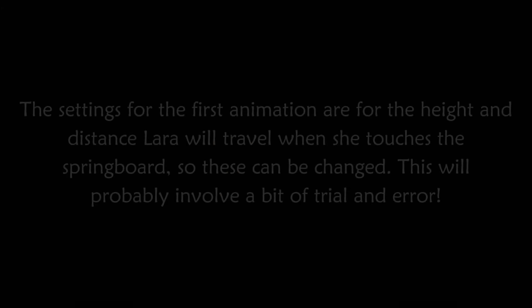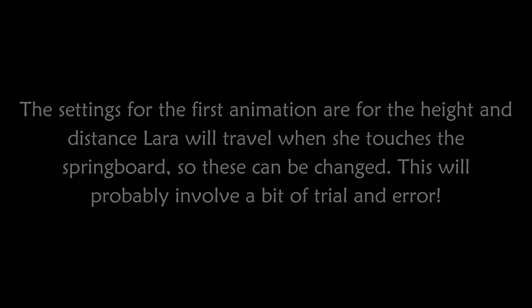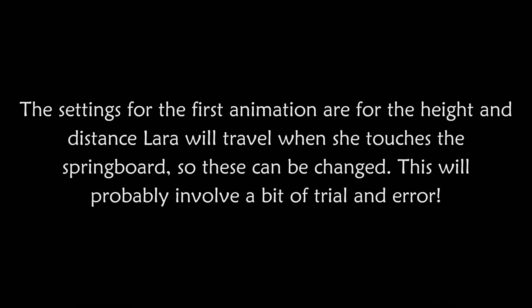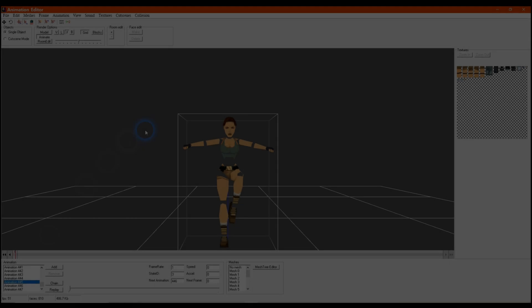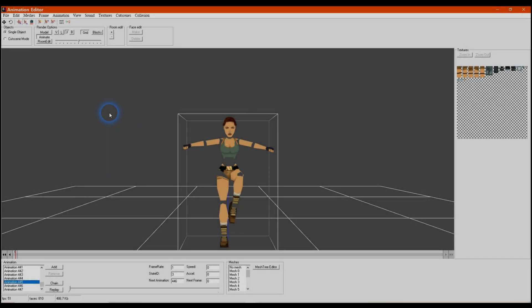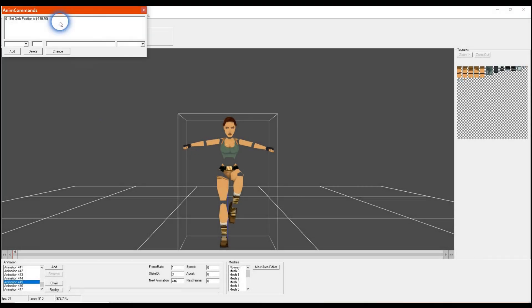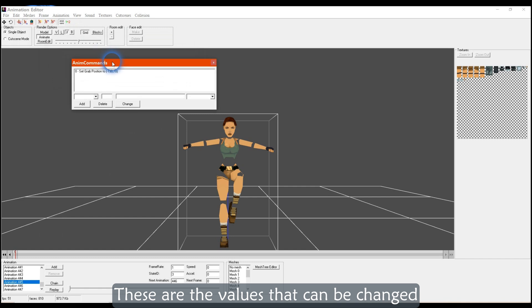The settings for the first animation are for the height and distance Lara will travel when she touches the springboard, so these can be changed. This will probably involve a bit of trial and error. These are the values that can be changed.